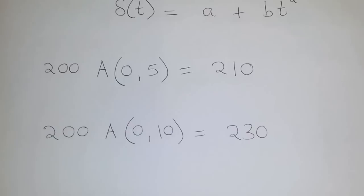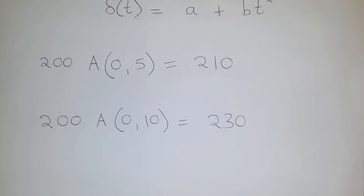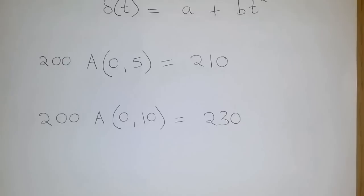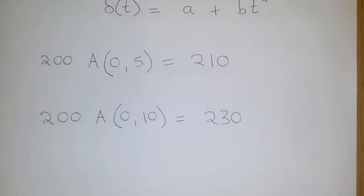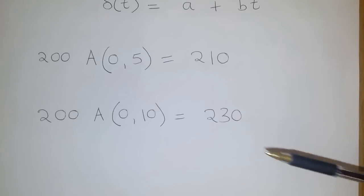Now, the force of interest given to us is a plus b t squared. And we know that to get the accumulated value of an investment made, you simply multiply the amount invested by the accumulation factor. So in our case here, 200 multiplied by the accumulation factor spanning 5 years gives you 210, while 200 multiplied by the accumulation factor spanning 10 years gives you 230.